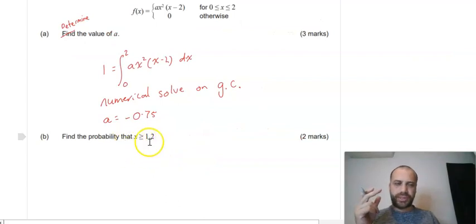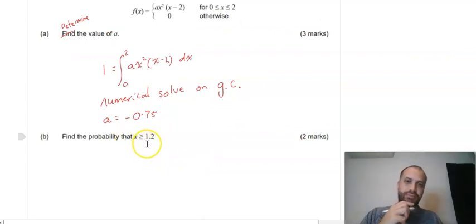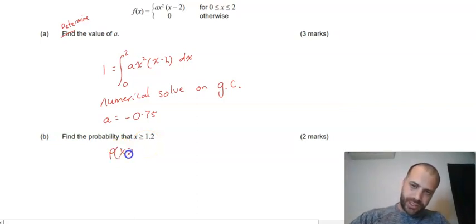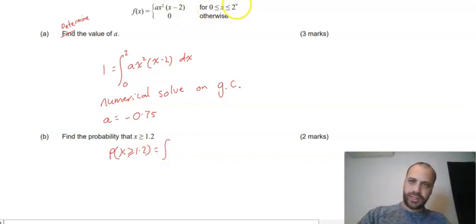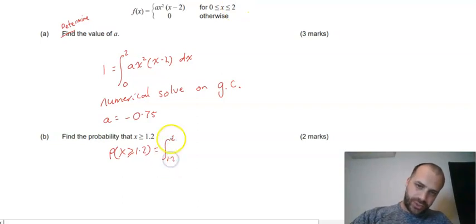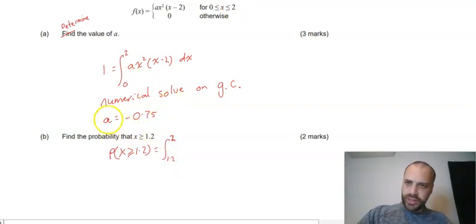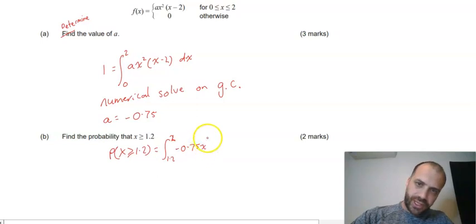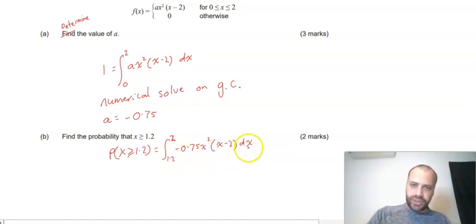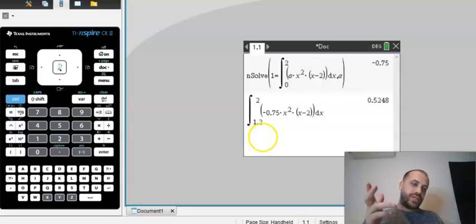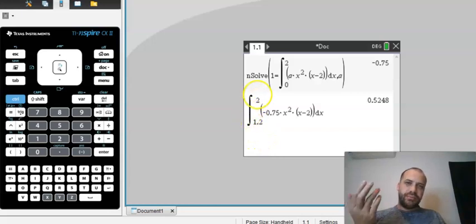So we're going to be finding the probability that x is greater than or equal to 1.2. The probability that x is greater than or equal to 1.2 is equal to the integral between 1.2 and 2. And we know now that A is negative 0.75, negative 0.75 x squared bracket (x minus 2) with respect to x. And we should be able to type that directly into our calculator and get an answer. So you've seen me type this in a few times. You don't need to watch me type it in again. Between 2 and 1.2, here's my PDF, my probability density function, and my answer 0.5248.